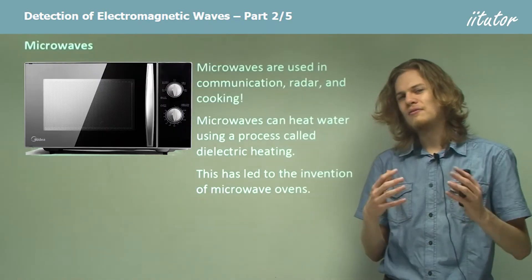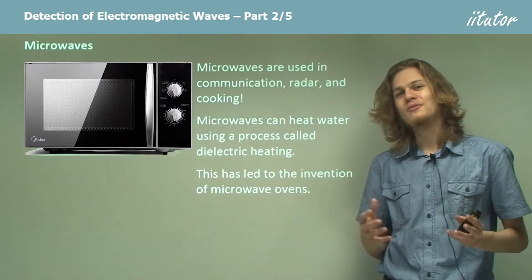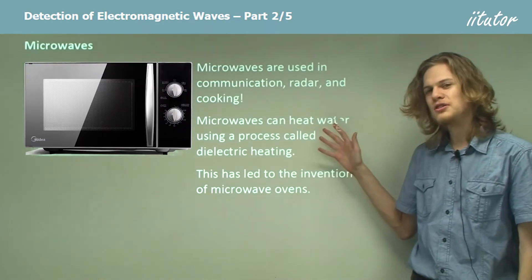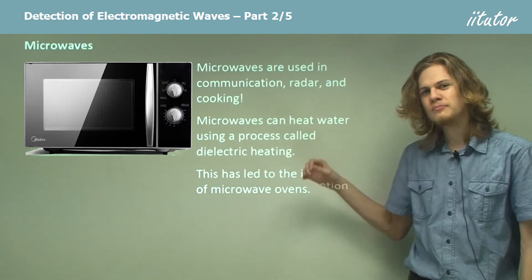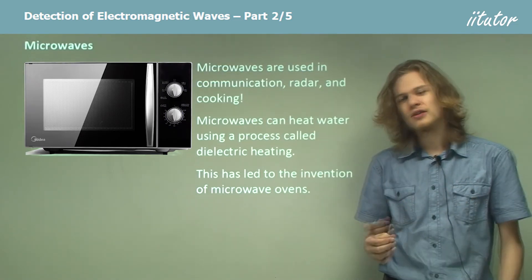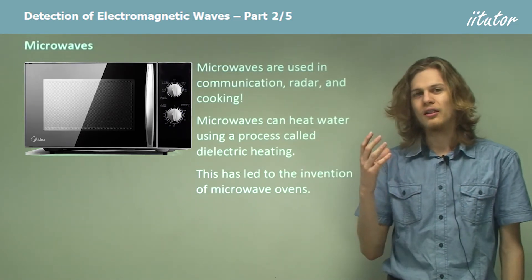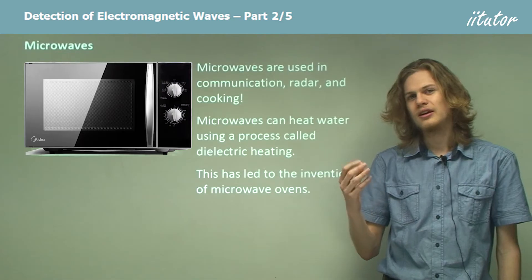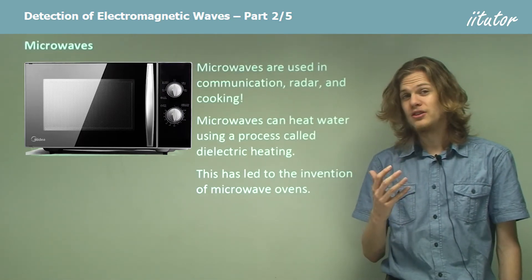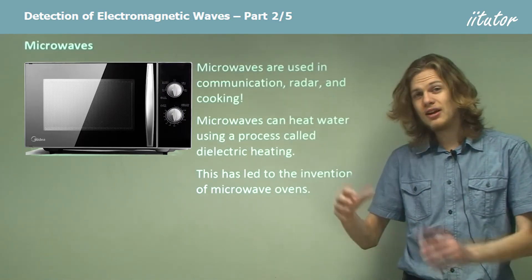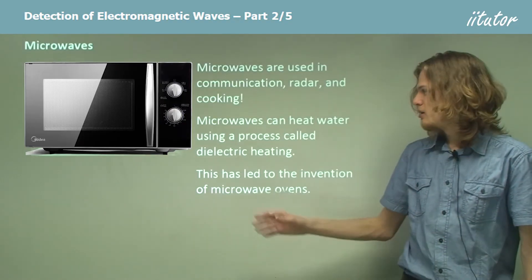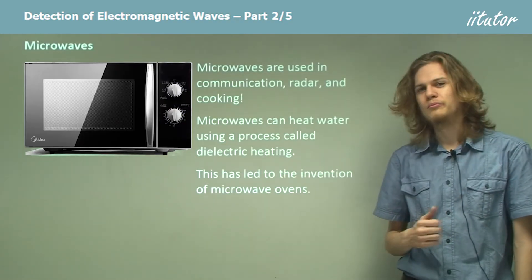Microwave ovens operate by using microwaves, which are produced in a similar way to radio waves, causing electrons in an antenna to vibrate back and forth very quickly. Except in this case the receiving antenna is not a conductor made of metal, but water molecules.